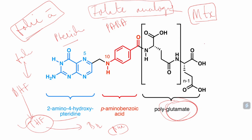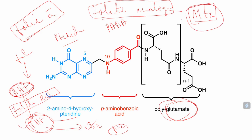In the body, dihydrofolate must convert into tetrahydrofolate — the active form. This conversion requires the enzyme dihydrofolate reductase. This folate reductase enzyme is inhibited by methotrexate. When the enzyme is inhibited, dihydrofolate is not converted into tetrahydrofolate, and therefore no purine synthesis occurs, no DNA synthesis occurs, and no cell division occurs. This stops cell division in normal cells as well as in neoplastic cells.